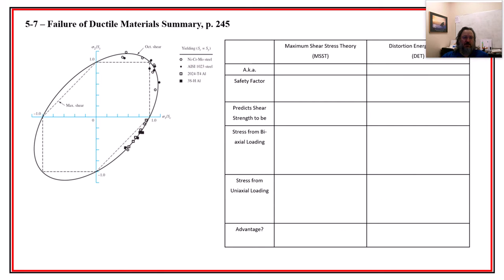All right, so here is the summary. Can I make myself smaller? I'll make myself very small. There I am. Okay, and I'll talk like Beetlejuice. All right, so we have these two competing theories, maximum shear stress theory and distortion energy theory. So we might as well compare and contrast them.